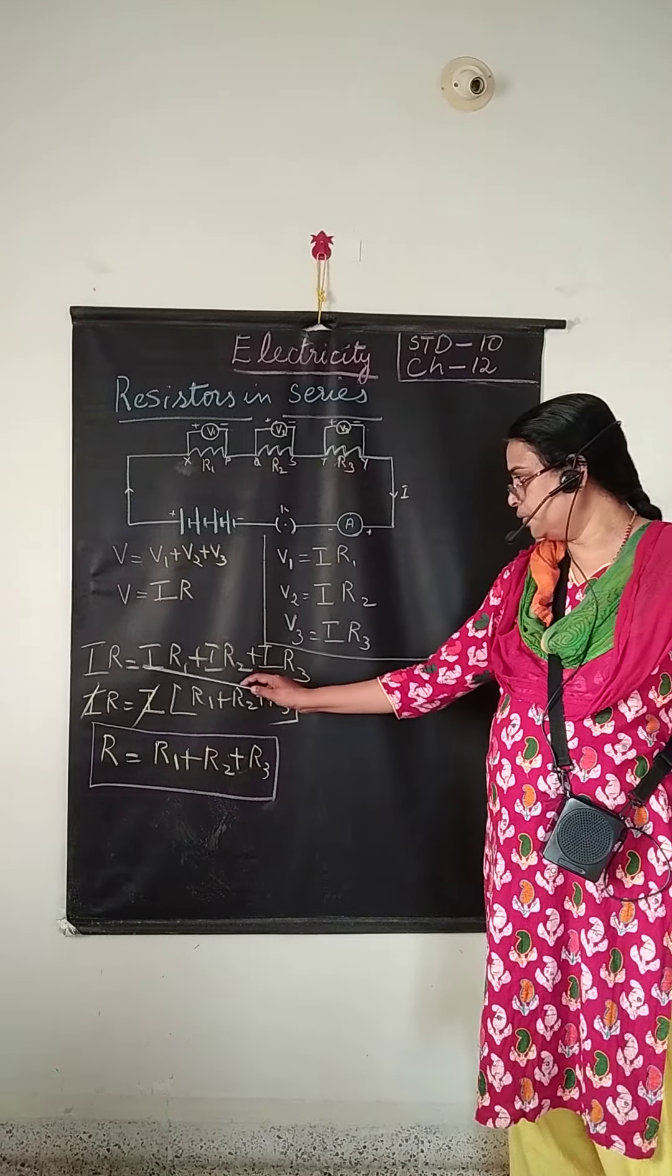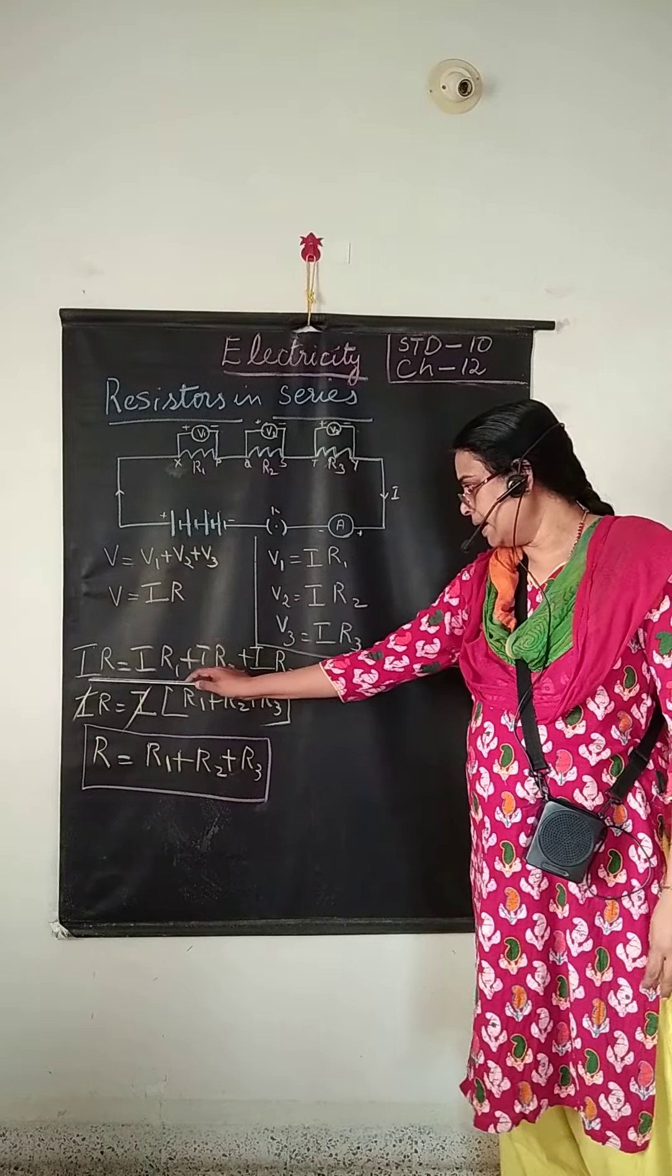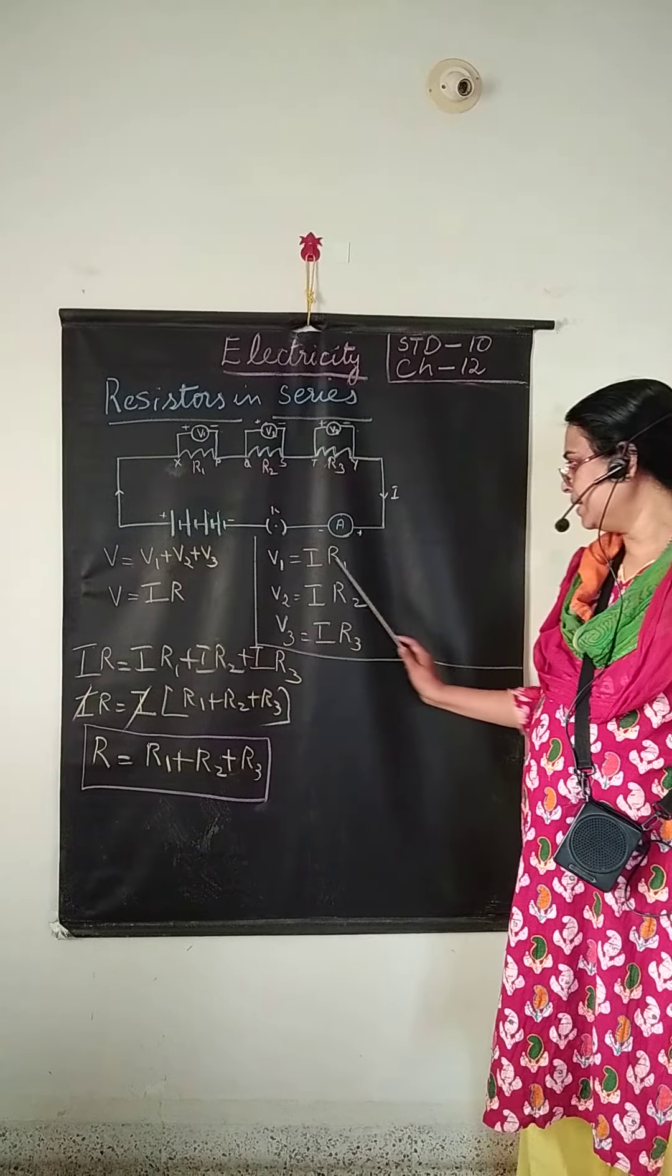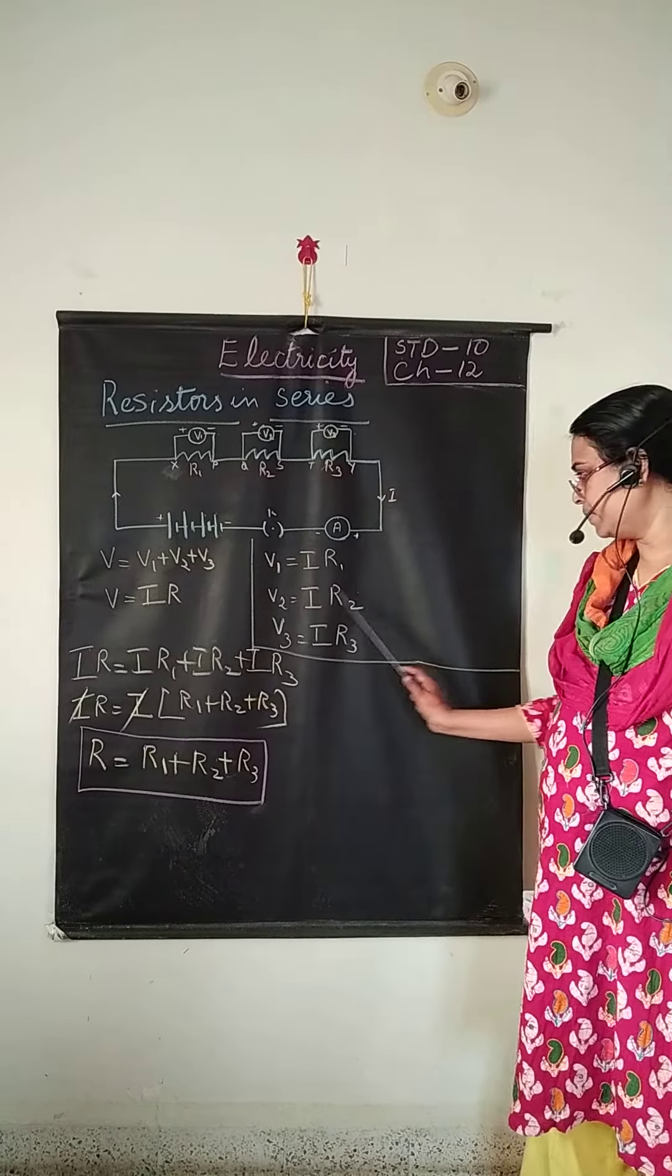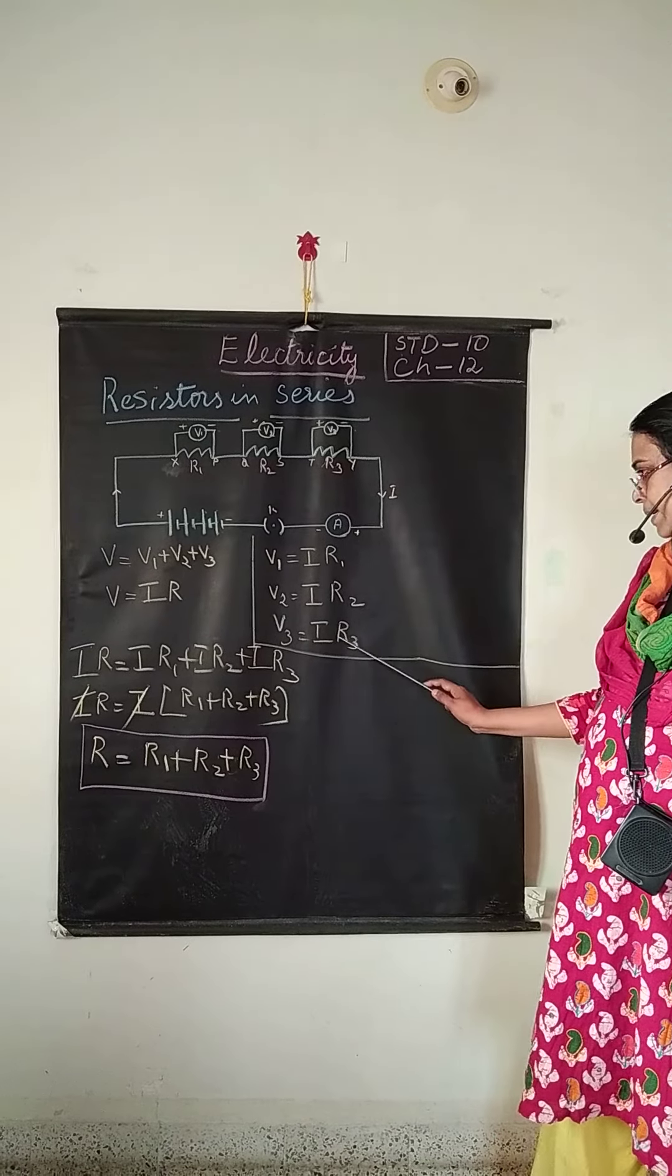Now substitute this value over here. V is equal to I R. And V1 is equal to I R1. V2 is equal to I R2. And V3 is equal to I R3.